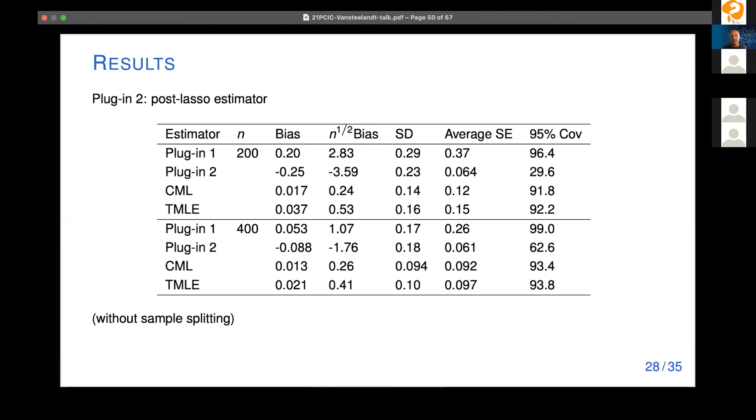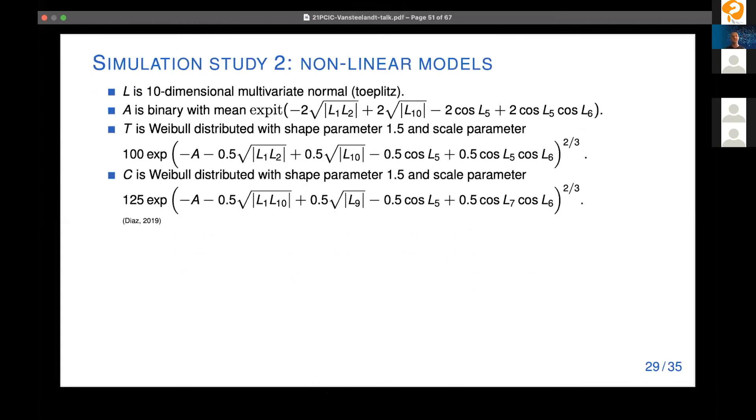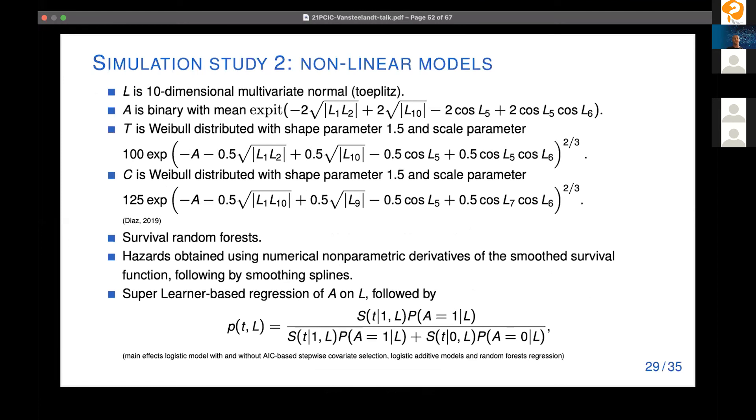In a second simulation study we looked at a much more challenging setting. This time we have a binary exposure but as you can see very complex models with a lot of nonlinearities motivated by a data generating mechanism that Ivan Diaz was using. Here we use survival random forest to estimate the survivor function and then based on it we obtain hazard estimates by taking numerical nonparametric derivatives of a smoothed survival function and then to make those hazards smooth we use smoothing splines and apply those to the obtained nonparametric derivatives. Again super learner was used for the exposure models.